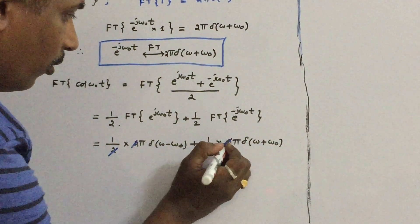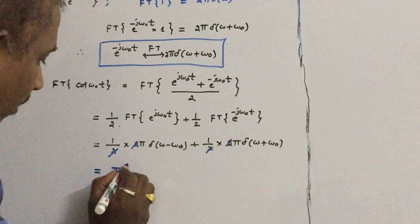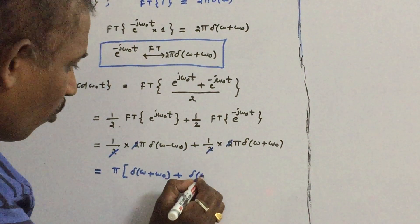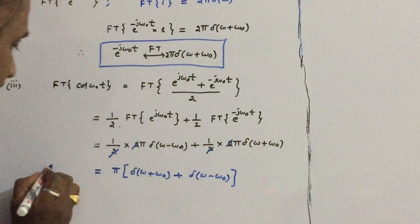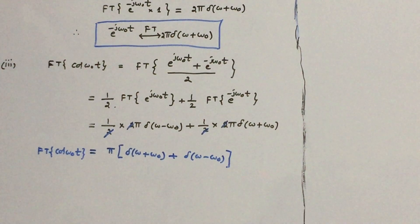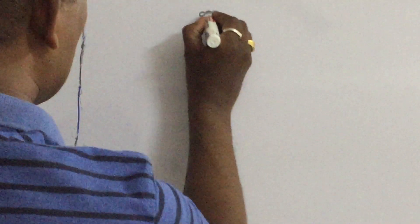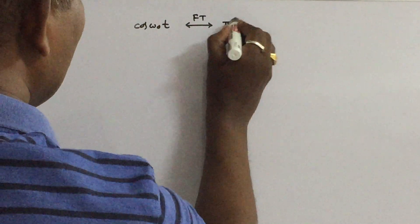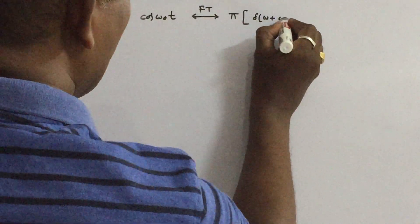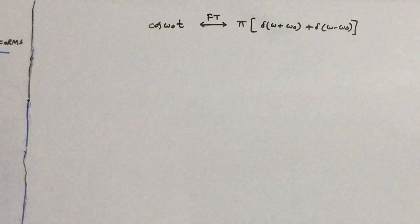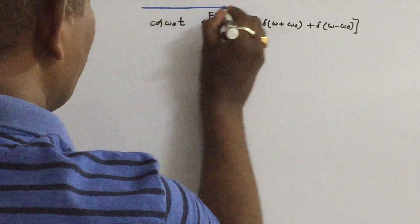Cancel out the 2s and take π as common. So the answer is π·[δ(ω+ω₀) + δ(ω−ω₀)]. This is the Fourier transform of the standard function cos(ω₀t). This is a very important formula — the Fourier transform of cos(ω₀t) is simply π·δ(ω+ω₀) + π·δ(ω−ω₀).